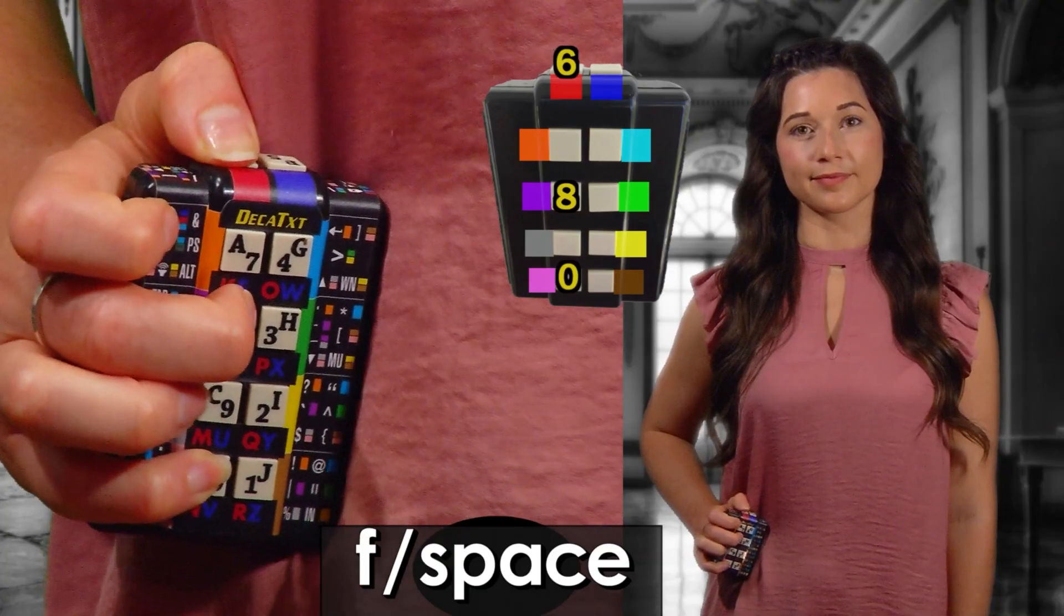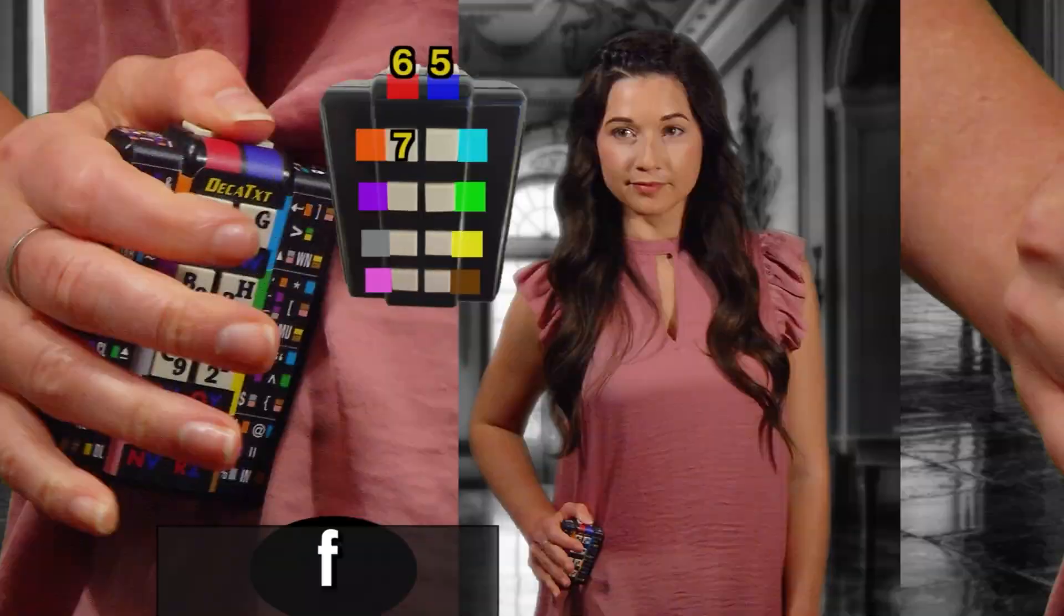For efficiency, press keys 6, 8, and 0 to swap the space key with the F key to make space a single press of key number 5.